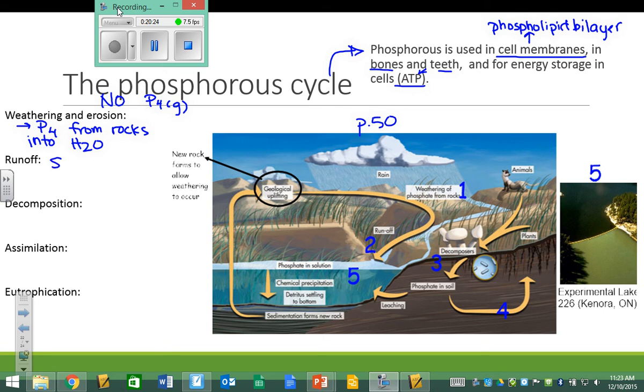Runoff, like we saw in the water cycle, is surface water. And runoff could take phosphorus towards plants, towards animals, or towards larger bodies of water. So, the runoff from the stream at the top is taking phosphorus all over the place.